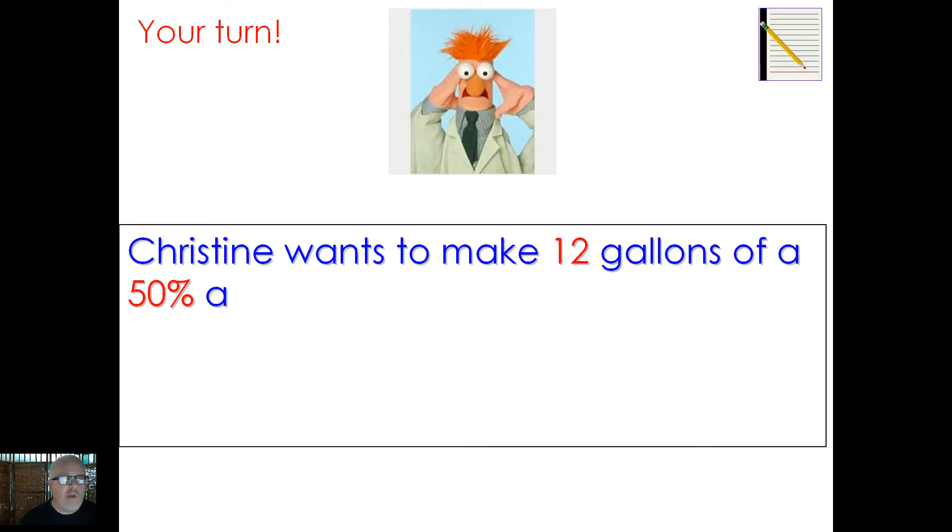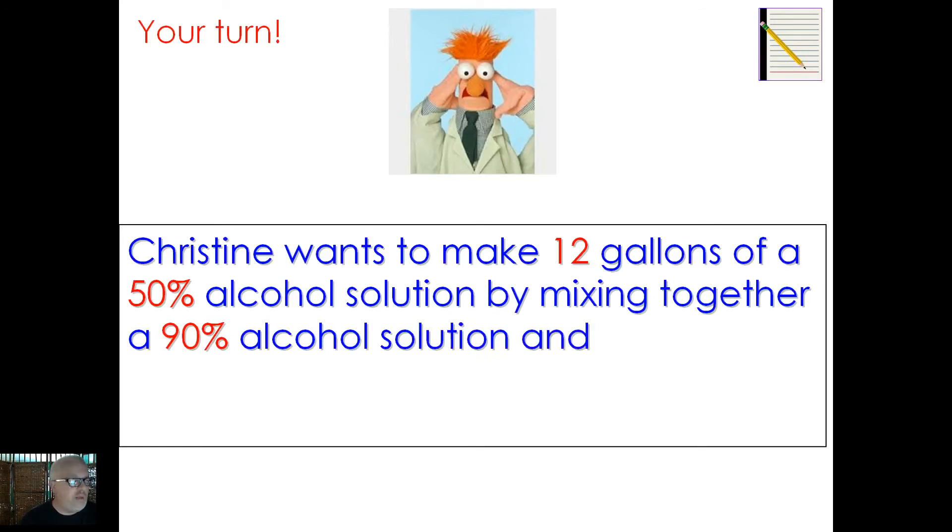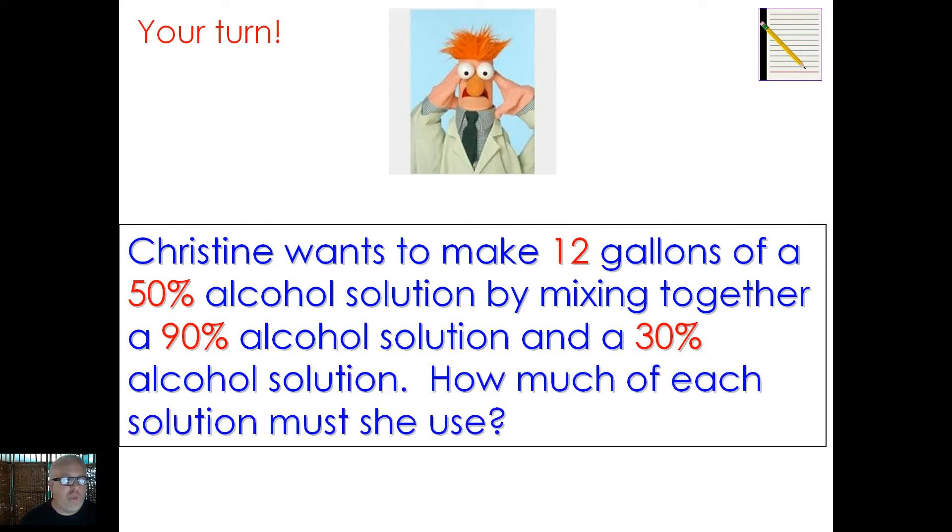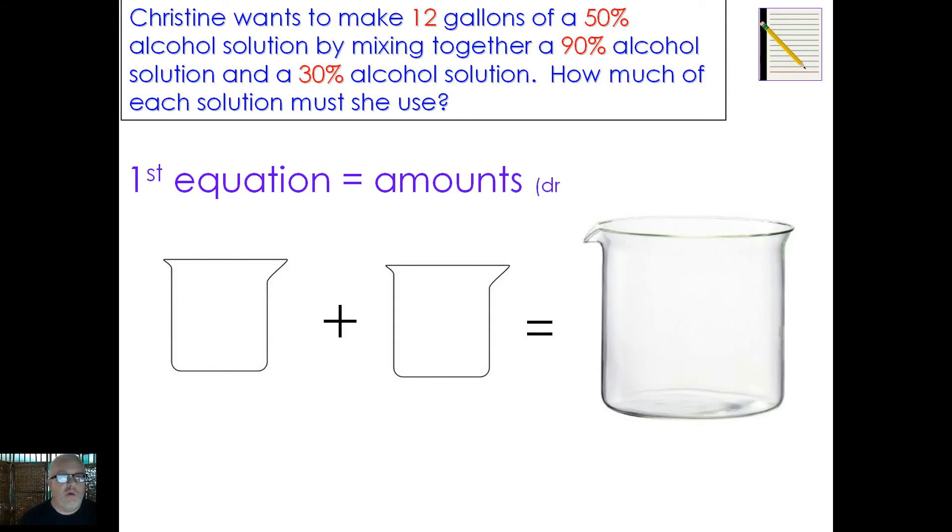All right, now here, I want you to take more of the lead here and maybe venture out and work ahead of me a little bit. Pause the video as frequently as you want to and can, and just try to work ahead. It says, Christine wants to make 12 gallons of a 50% alcohol solution by mixing together a 90% alcohol solution and a 30% alcohol solution. So notice what's in red here. Our goal is 12 gallons of a 50% alcohol solution. What are we working with? We're working with 90% and 30%. So think of those alcohol bottles from medicine. One's got 90% alcohol solution, one's got 30%. She wants to mix them together, and in the end, she wants it half alcohol and a total of 12 gallons. So pause the video, try to start filling this out and see how far you can get.